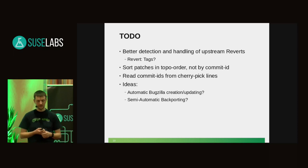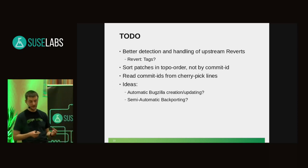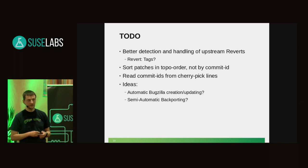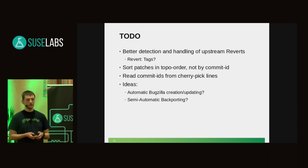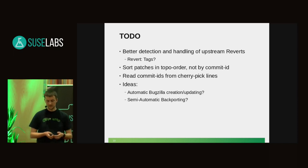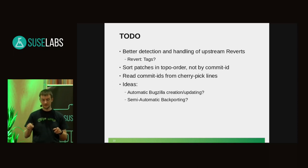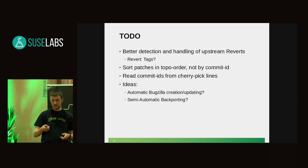The next thing I want to implement is to read commit IDs not only from the commit ID tag we have in our patches, but also from cherry-pick lines. So when you have a line like 'commit X upstream', I would also like to read the commit ID from that line. This came to my attention when I looked into our SSBD and L1TF backports, which didn't have the correct upstream commit IDs because we didn't backport the upstream commits directly but instead backported patches already in some stable tree. I think Takashi fixed that meanwhile, but it would be good to also read commit IDs from cherry-pick lines.